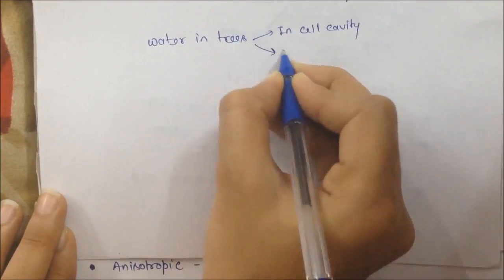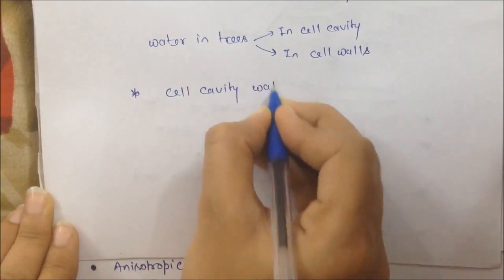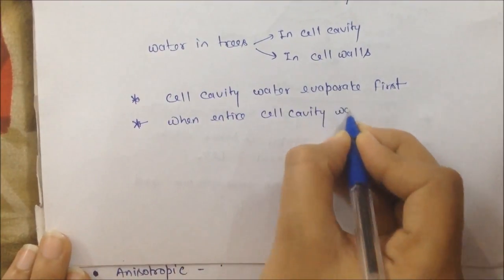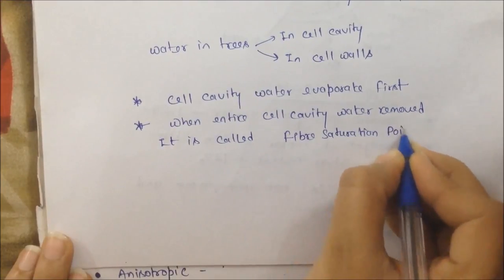In cell cavities and in cell walls. When we dry, the water in cell cavity is first evaporated. When the entire cell cavity water is removed, it is called fiber saturation point.